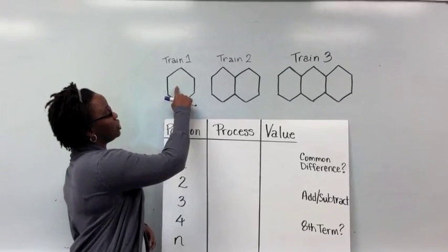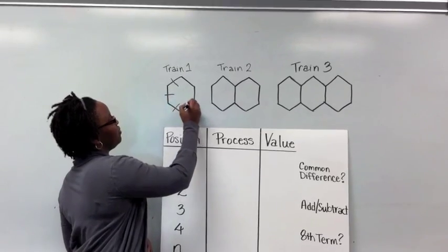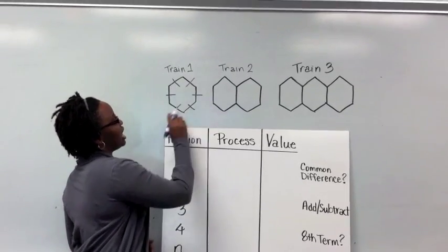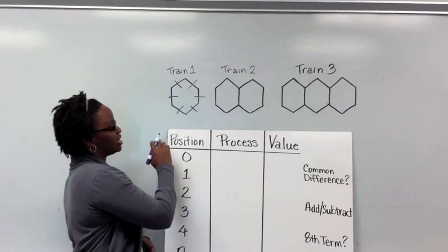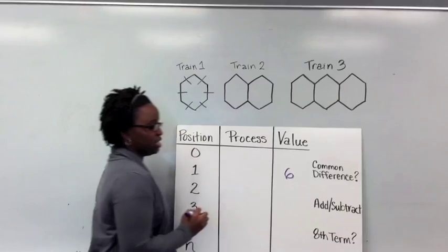So if we look at the train here in position 1, perimeter is the distance around a figure, and since it's 6 sides, the first hexagon here has a value or a perimeter of 6.